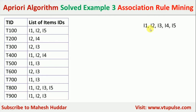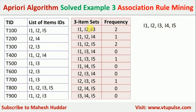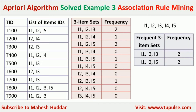We find the frequency of each three-itemset. For example, I1-I2-I3 is present 2 times. After counting all frequencies, we keep those with frequency ≥ 2. In this case, only two qualify as frequent three-itemsets: I1-I2-I3 and I1-I2-I5.